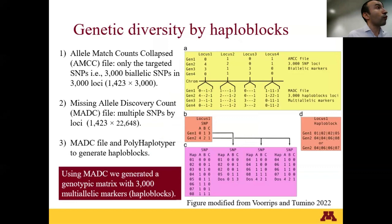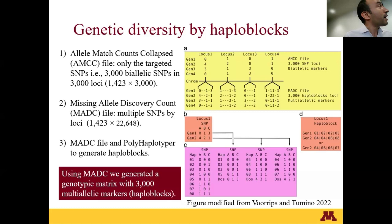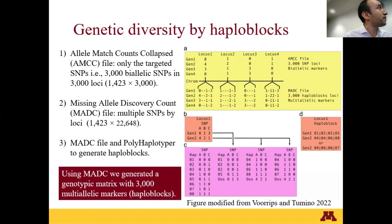The first step was to convert the biallelic markers into multiallelic markers using software called PolyHaplotyper. In panel A, the upper part shows one file obtained from DArTag — the AMCC file — corresponding to the targeted markers. In total, we have around 3,000 biallelic SNPs across the individuals. In the lower part of panel A, we have multiple SNPs that are adjacent — just a few base pairs away from the targeted SNPs — so we can obtain more markers using the Missing Allele Discovery Count (MADC). In total, we have 22,000 markers in that way. We used the MADC file to convert these multiple SNPs into multiallelic markers named haplotype blocks.